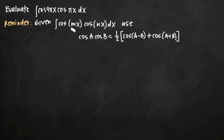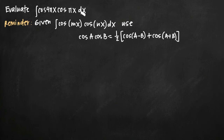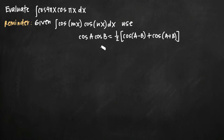Whenever we have an integral of this form, we can use the identity cosine of a times cosine of b, regardless of the values of a and b, and that simplifies to ½ times cosine of (a minus b) plus cosine of (a plus b). We're talking about this specific type of integral because we have this convenient identity that allows us to simplify it.